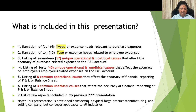I have included the following aspects in my presentation: narration of the 4 types of expense heads related to purchase expenses; narration of the 10 types of expense heads related to employee expenses; listing of the 17 unique operational and unethical causes out of 68 that affect the accuracy of purchase-related expenses in the P&L account; listing of the 40 unique operational and unethical causes that affect the accuracy of employee-related expenses in the P&L account; listing of 8 common operational causes that affect the accuracy of financial reporting of P&L or balance sheet; and listing of 3 common unethical causes that affect the accuracy of financial reporting of P&L or balance sheet.